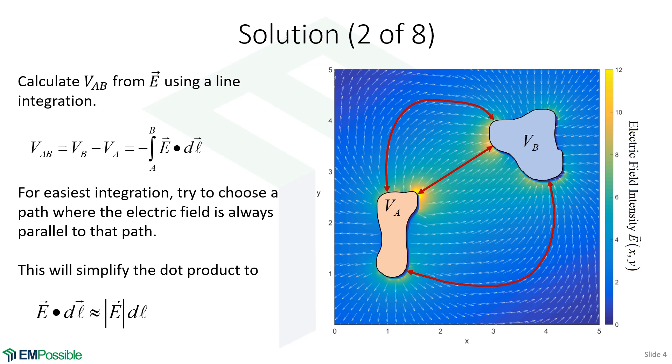That path can be anything. I've drawn three options here. For our purposes, I think the ideal path is one where the electric field is roughly constant and roughly always tangential to the line. That way, the dot product is a lot easier and it'll reduce to just a scalar multiplication.